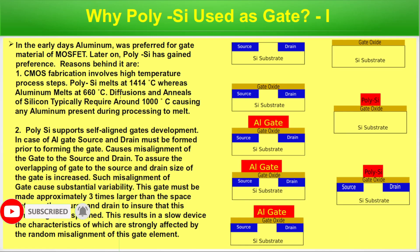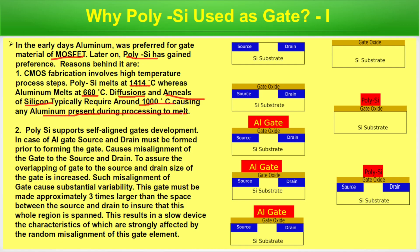Why is polysilicon used as gate? In early days, aluminium was preferred as the gate material of MOSFETs. Later, polysilicon gained preference. One reason is that CMOS fabrication involves high temperature process steps, so we need materials that can withstand high temperatures. Polysilicon melts at 1414 degrees centigrade whereas aluminium melts at 660 degrees centigrade. The diffusion and anneal of silicon typically requires around 1000 degrees centigrade, causing any aluminium present during the process to melt.